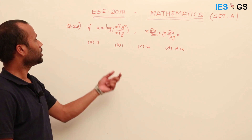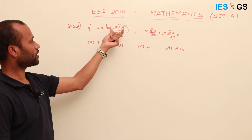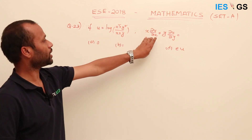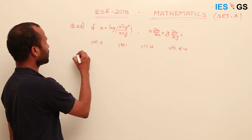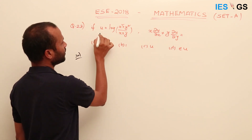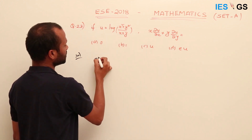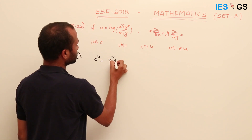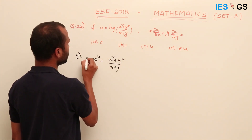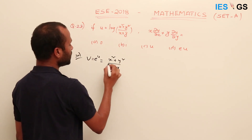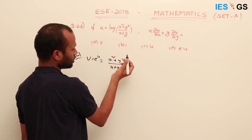Question number 23: u = log[(x² + y²)/(x + y)]. Find the value of x·∂u/∂x + y·∂u/∂y. Let v = e^u = (x² + y²)/(x + y). We check if v is a homogeneous function by substituting (nx, ny): v(nx, ny) = (n²x² + n²y²)/(nx + ny).